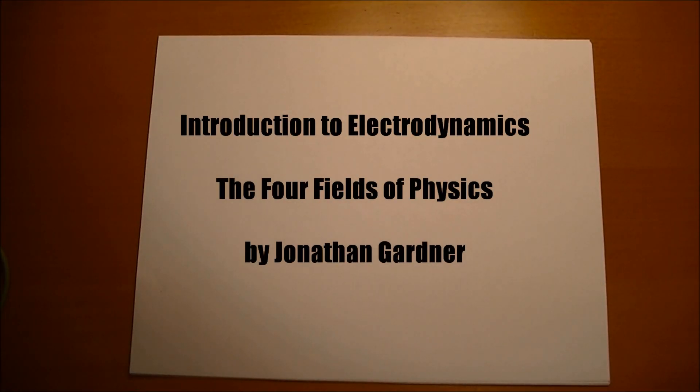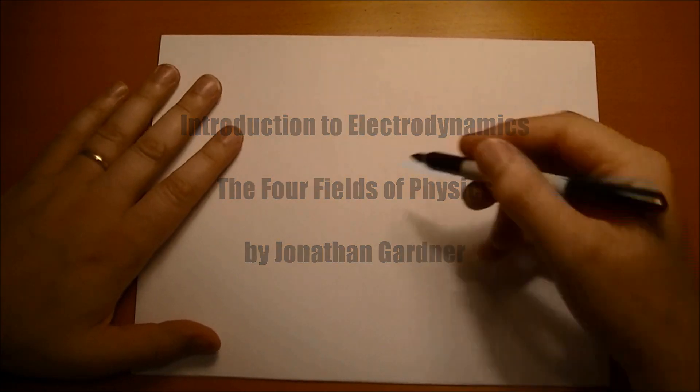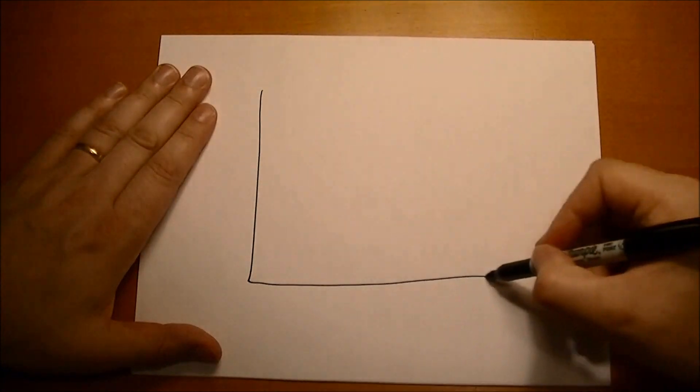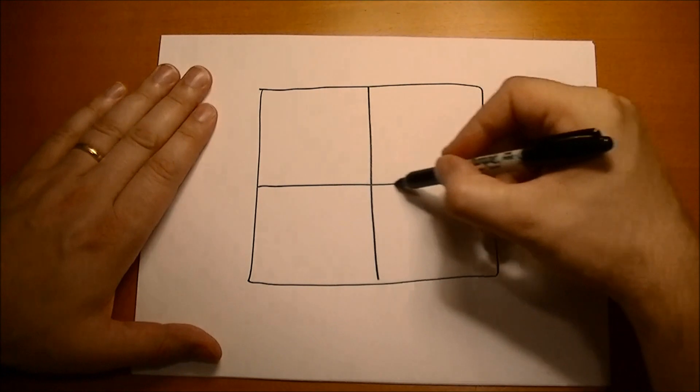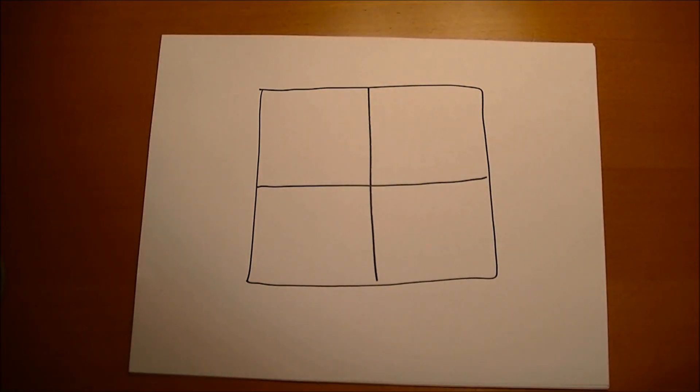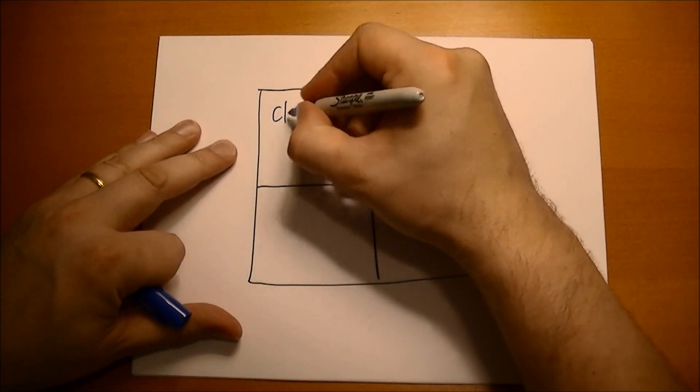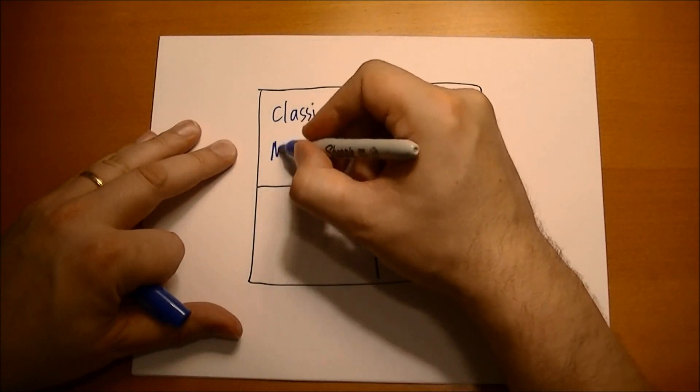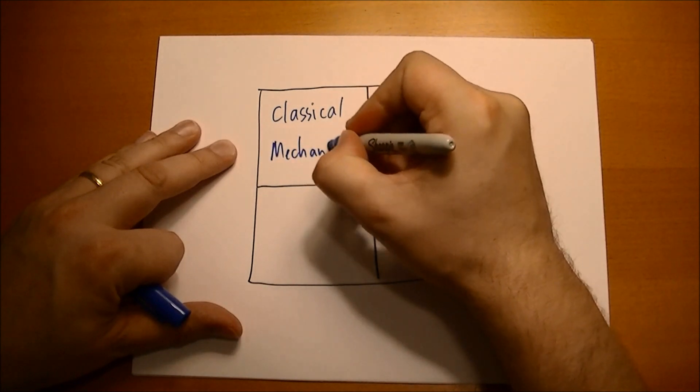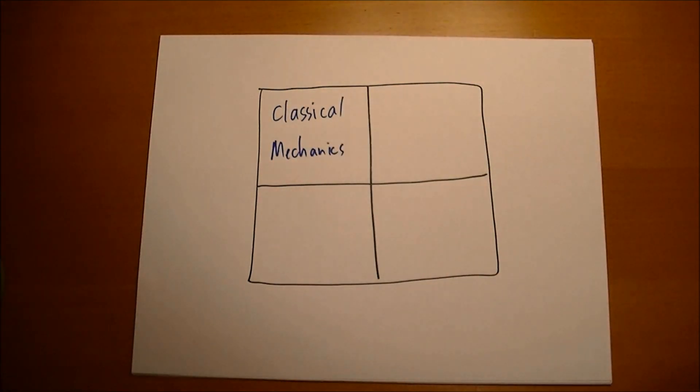So Griffith starts off his book, he introduces the four great realms of physics. He draws a little box like this. And in the upper left hand corner he puts classical dynamics, classical physics that we all learn when we learn about Newton's laws and how masses move and gravity and the orbit of the planets.